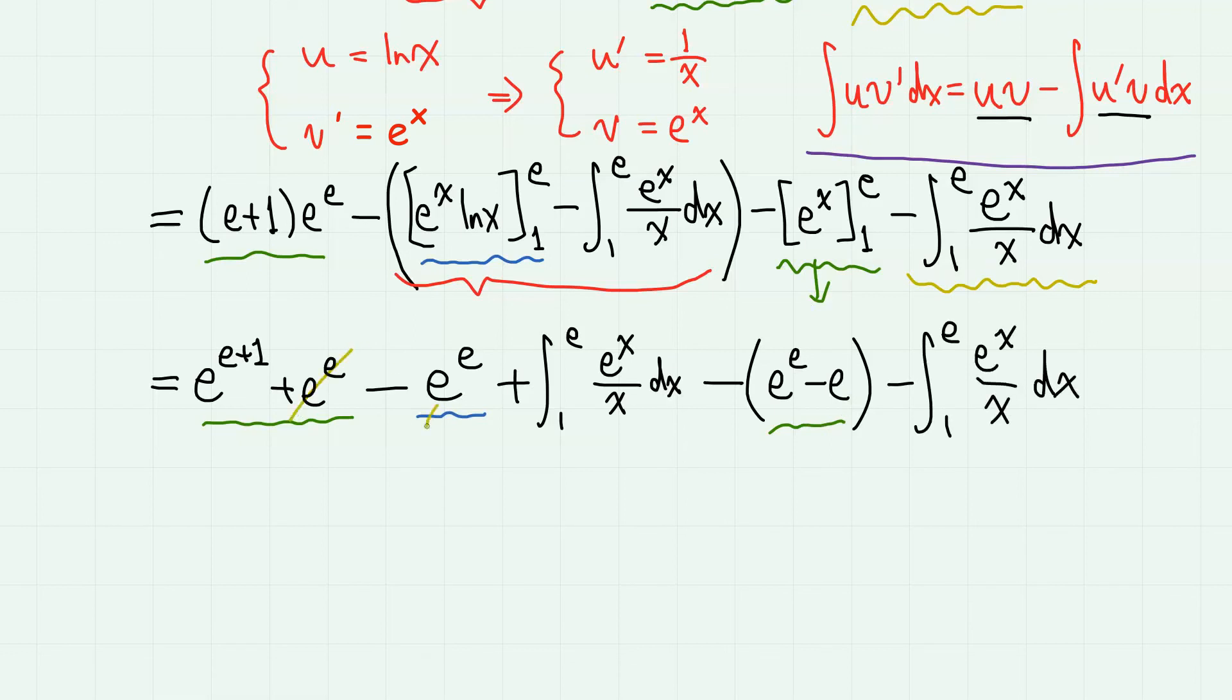So here, this e^e terms cancel out, and most importantly, this term and this term cancel out each other. So we have e^(e+1) - e^e + e. And this is our answer.